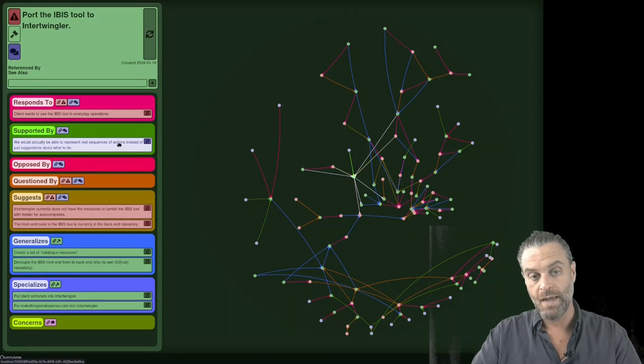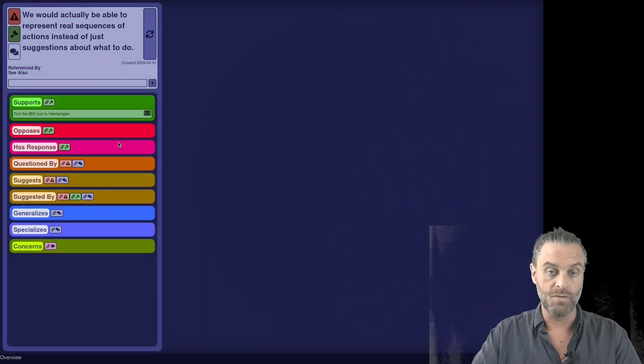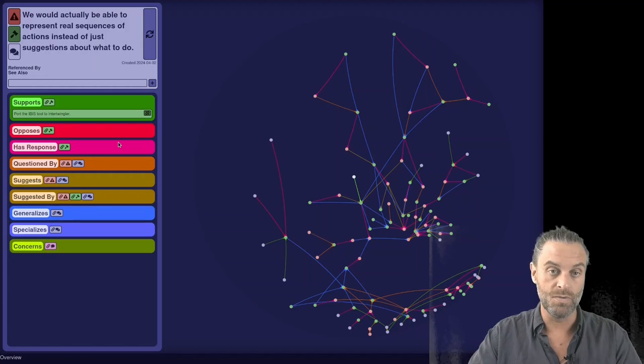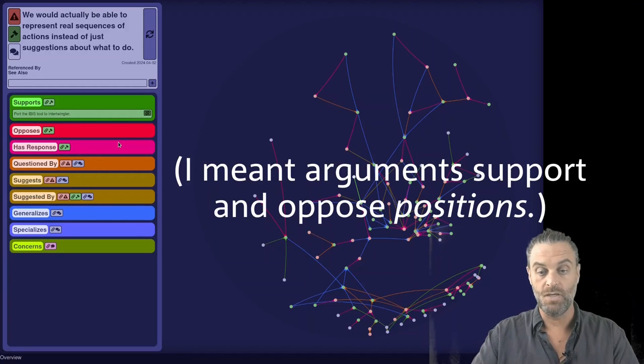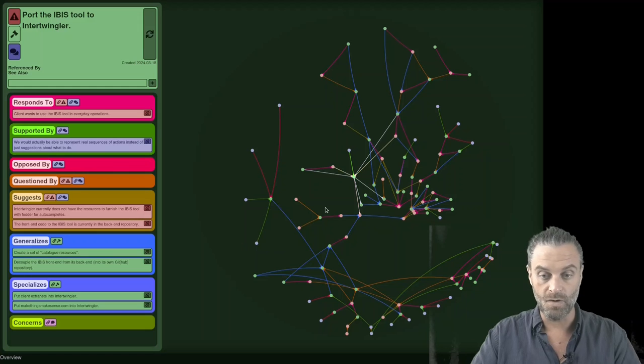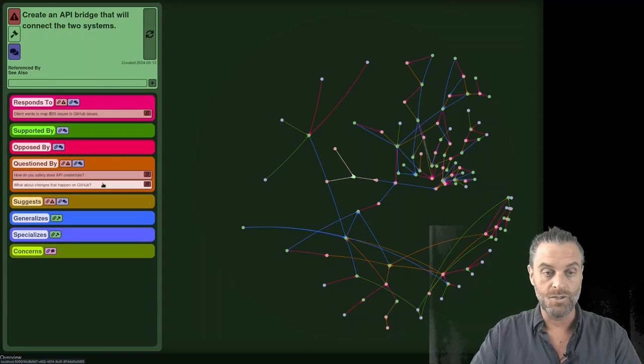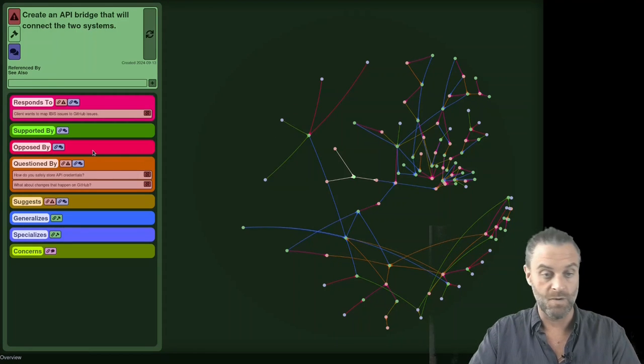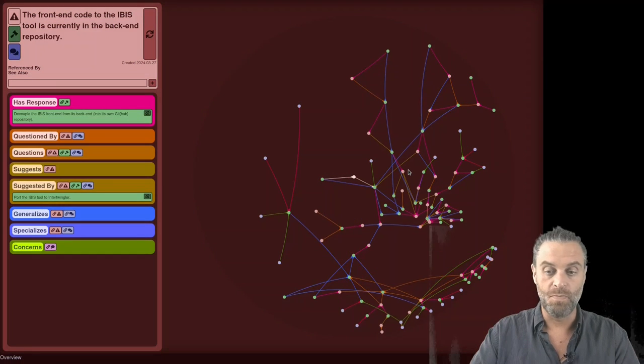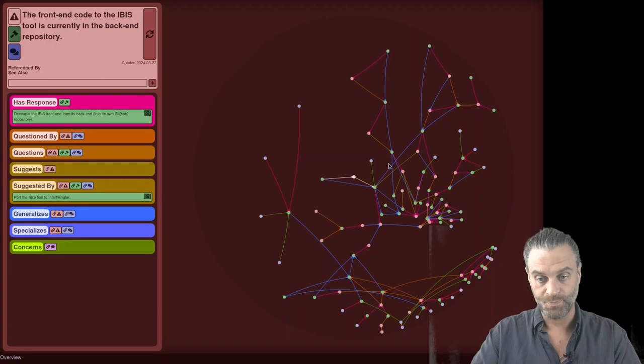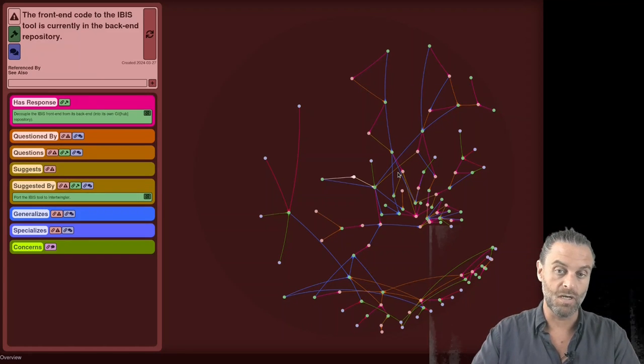Then you can have arguments which will either support or oppose a given issue. And there are other relationships too. An issue can be questioned, or a position or anything rather can be questioned by an issue. It can be suggested or it can suggest a new issue. You build up a structure of issues, positions, and arguments.